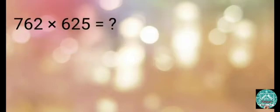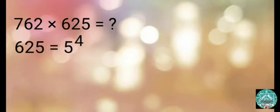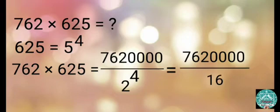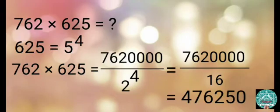Multiply 762 by 625. 625 equals 5 raised to the power 4, so put four zeros to the right of 762. Then divide this number by 2 raised to the power 4, that is 16. After dividing, we get 476,250.